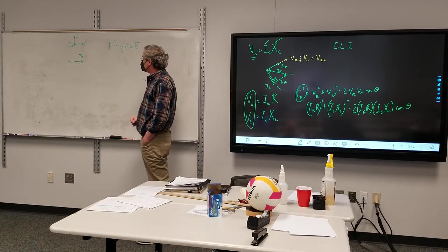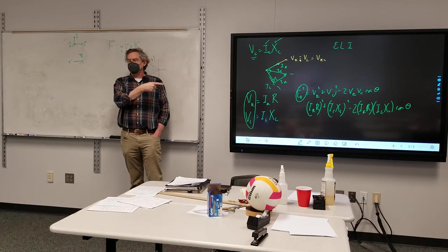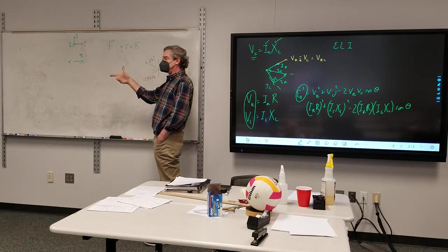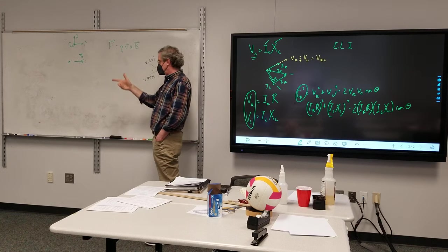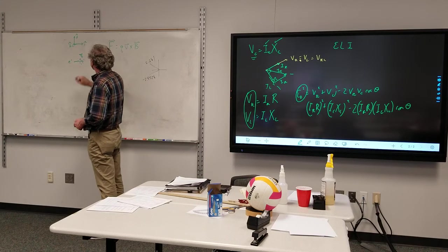Or the sten gun. Electrons traveling that way, but the sten gun's for positive charges, so that way. Magnetic field out, bump points in the direction of the force. So three different ways it will be forced up.